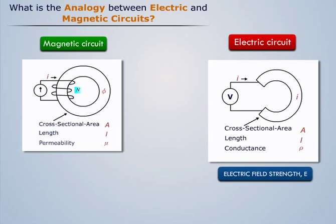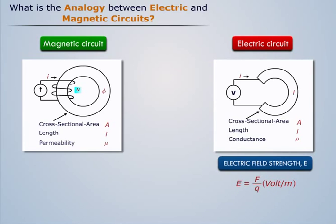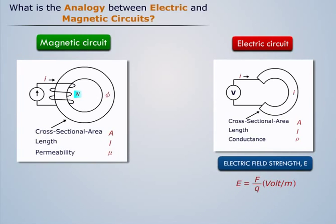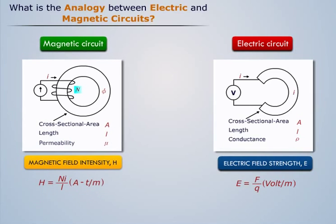In a magnetic circuit, electric field strength E is defined as the voltage drop per unit length. In a magnetic circuit, magnetic field intensity H is defined as the magnetomotive force per unit length. Magnetic field intensity in a magnetic circuit corresponds to the electric field strength in an electric circuit.